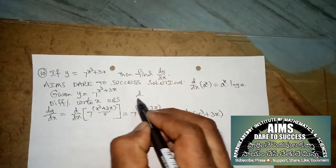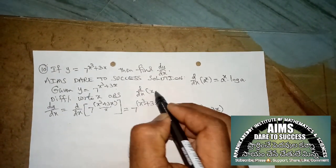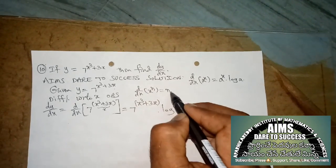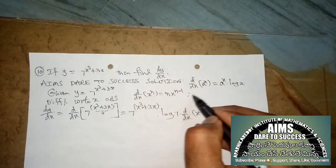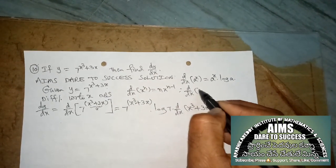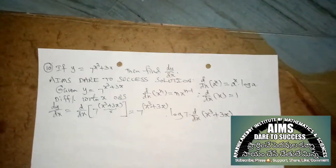One more formula: d by dx of x power n equals n times x power (n minus 1), and d by dx of x equals 1.